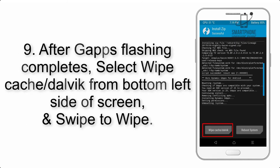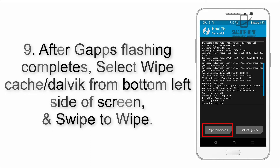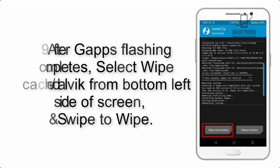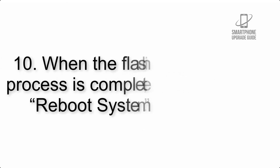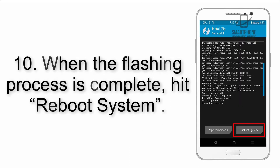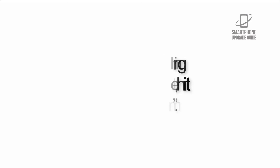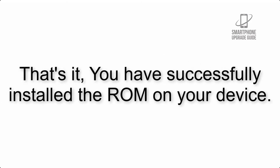Step 8: Flash the GApps zip package in the same manner. Step 9: After GApps flashing completes, select Wipe Cache and Dalvik from the bottom left side of the screen and swipe to wipe. Step 10: When the flashing process is complete, hit Reboot System. That's it — you have successfully installed the ROM on your device.